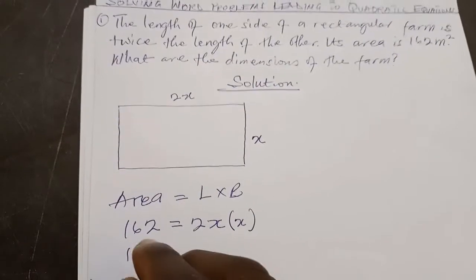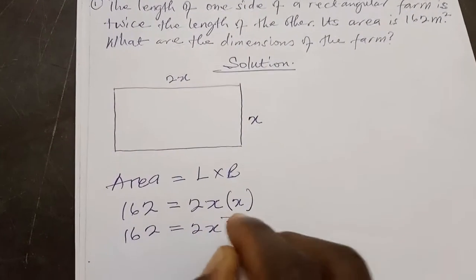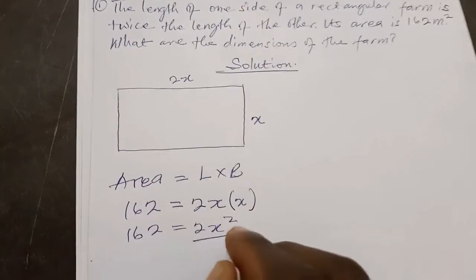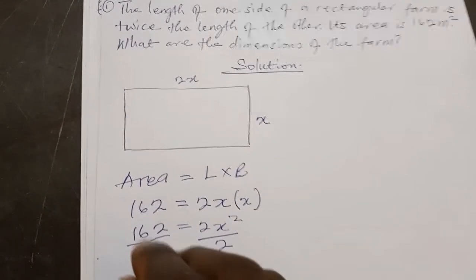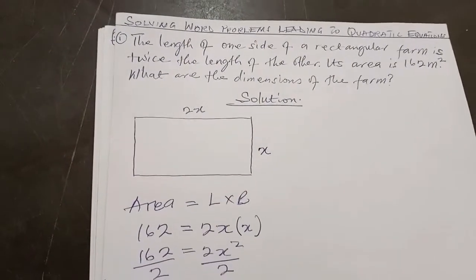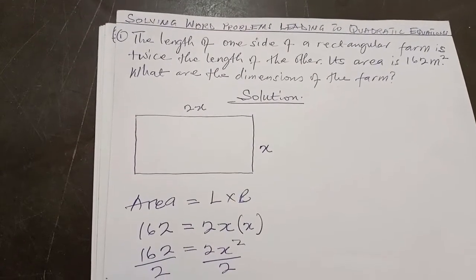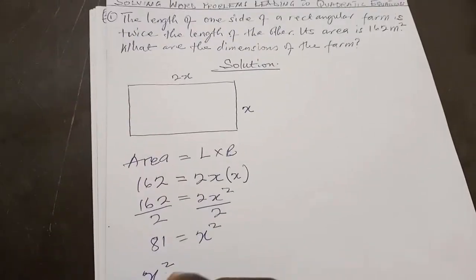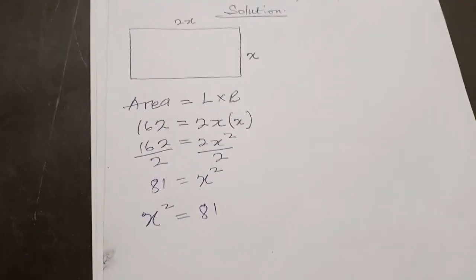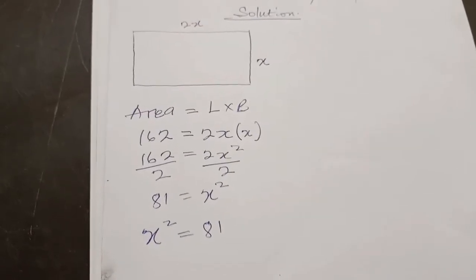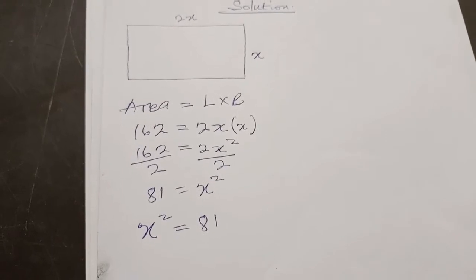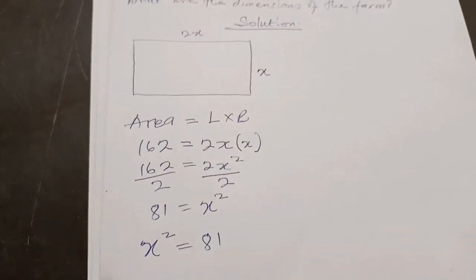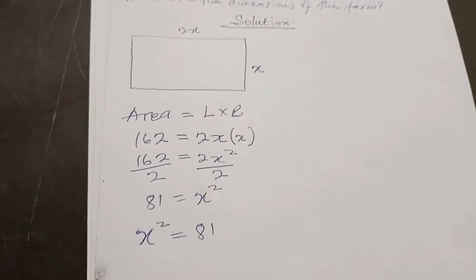This means that 162 is going to equal 2X squared. We are looking for the value of X and not 2X squared, so we divide both sides by 2 to get rid of the coefficient of X squared first. Dividing through gives us 81 equals X squared. We are not looking for X squared, we are looking for X. Just as we have seen in other videos on quadratic equations, we either take the square root of both sides or use the difference of two squares to solve.